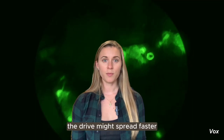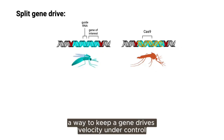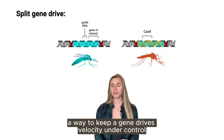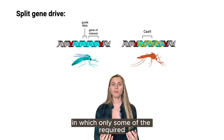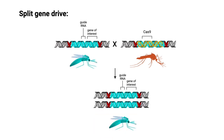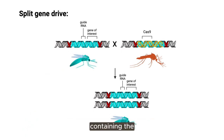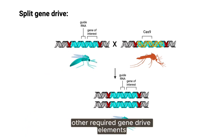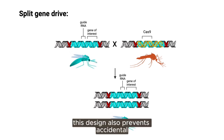Another common concern is that the drive might spread faster and further than desired. One way to keep a gene drive's velocity under control is to use a split gene drive, in which only some of the required elements of the drive are present in released organisms. To make the drive begin, individuals must breed with others containing the other required gene drive elements, which can be released in a slow and controlled fashion. This design also prevents accidental escapes of a gene drive from the lab.